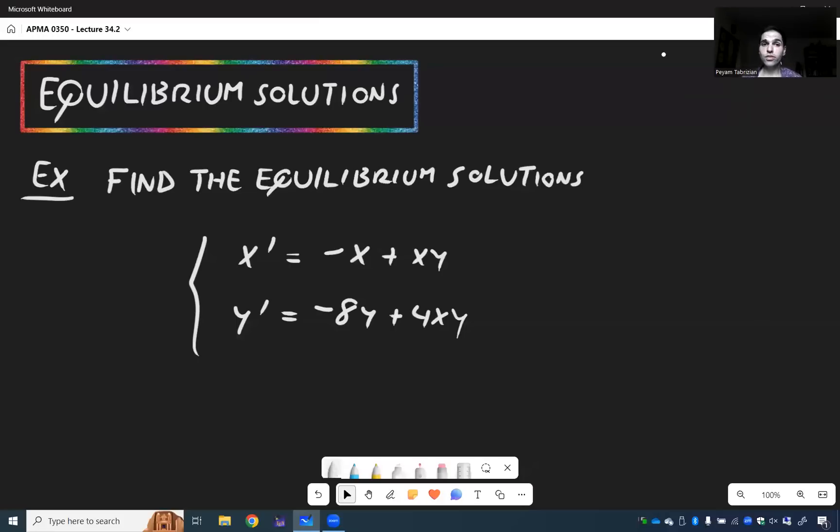Just like for first-order ODEs, we can also find equilibrium solutions of systems. So let's find the equilibrium solutions of x prime is minus x plus xy and y prime is minus 8y plus 4xy.